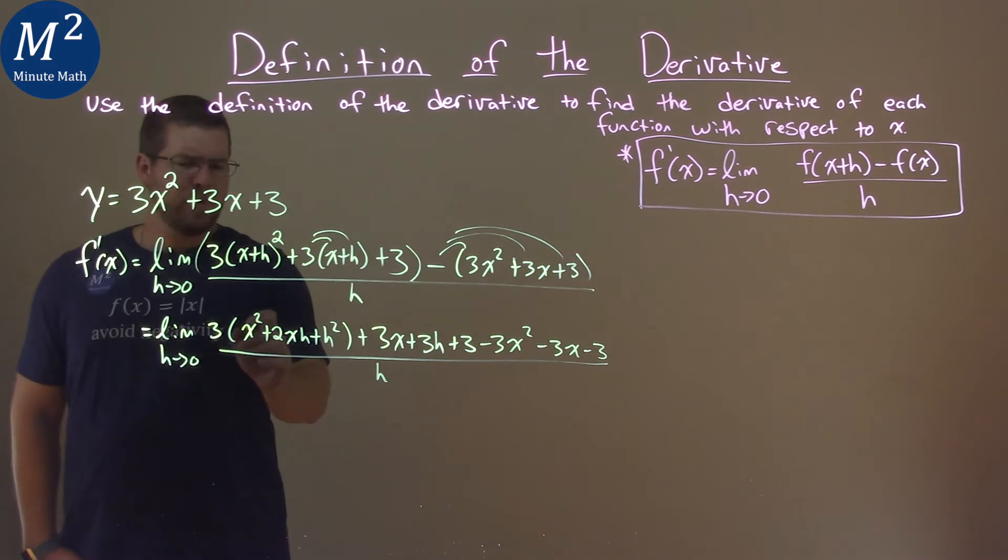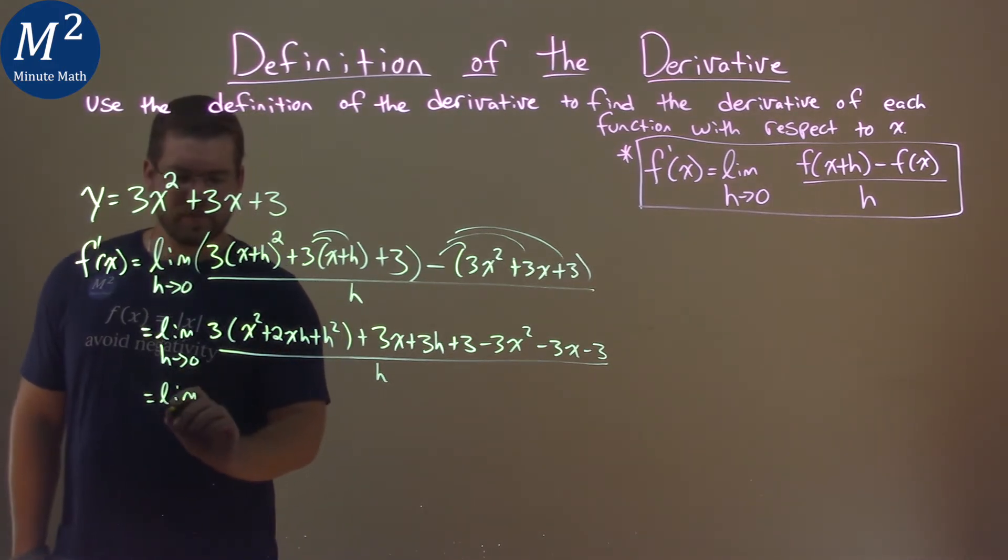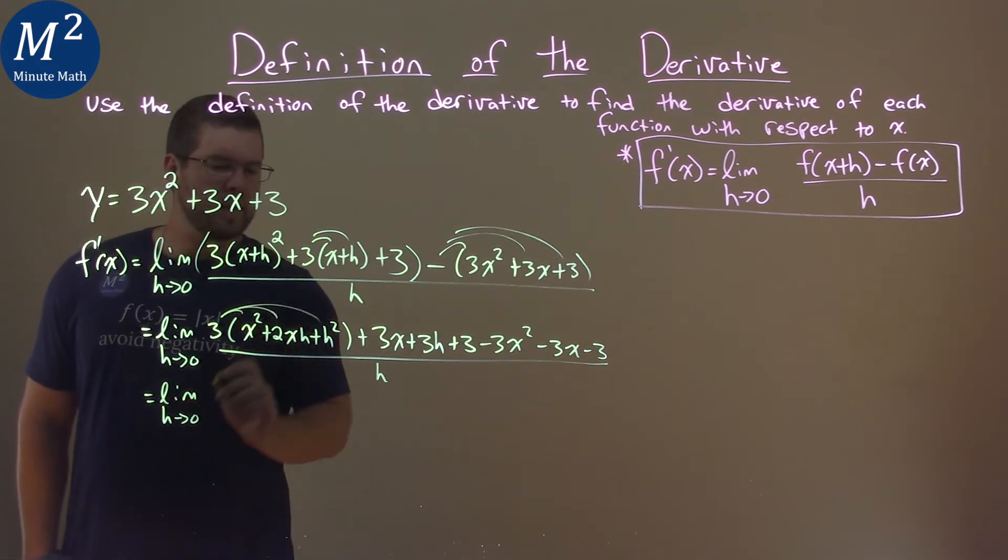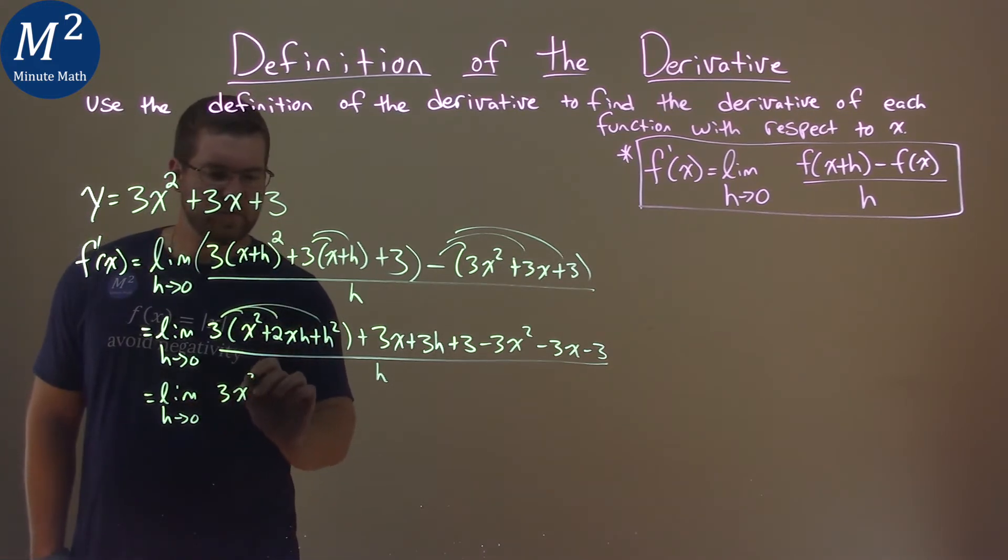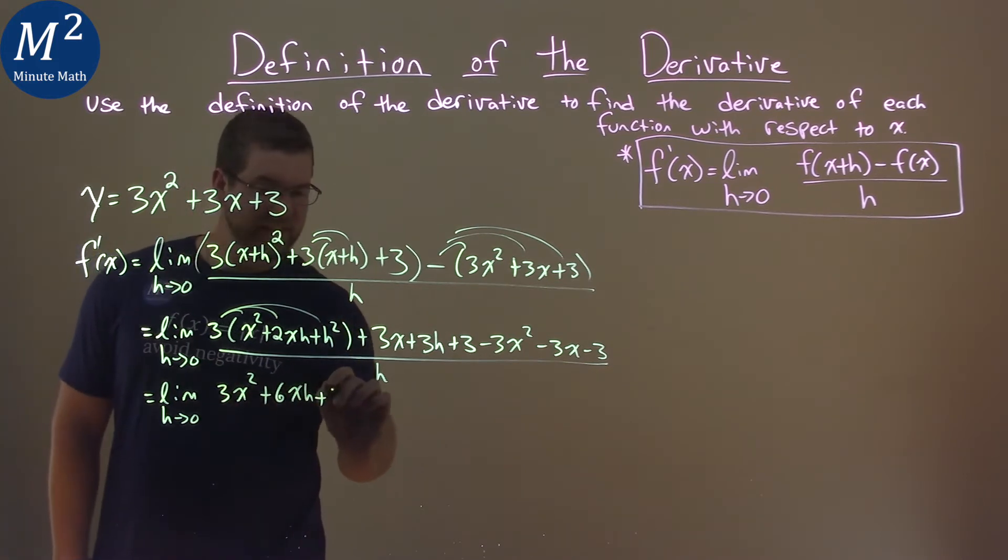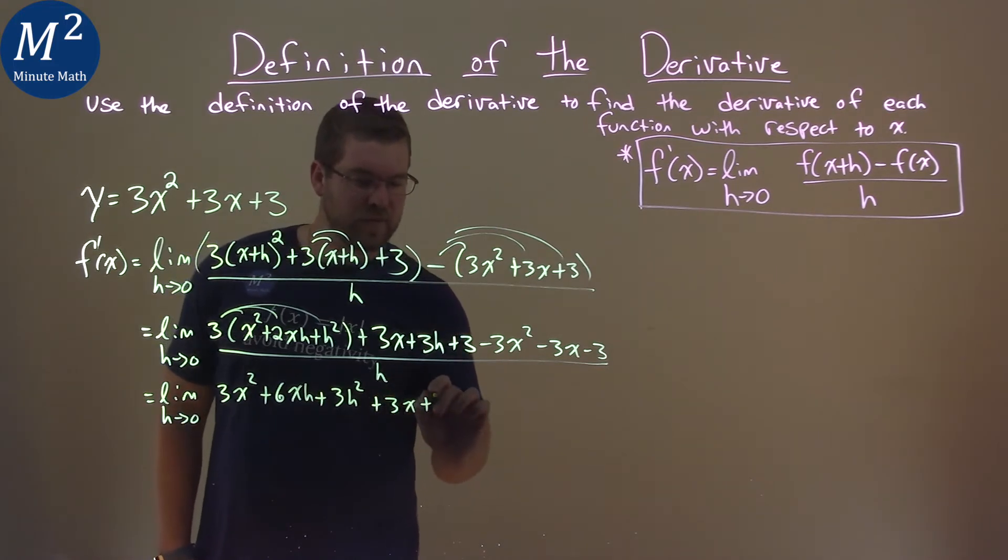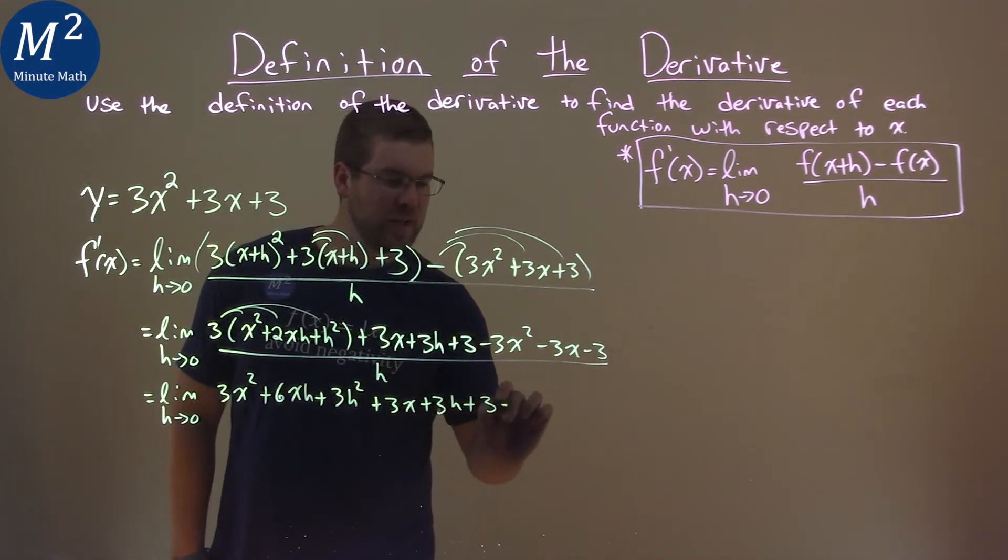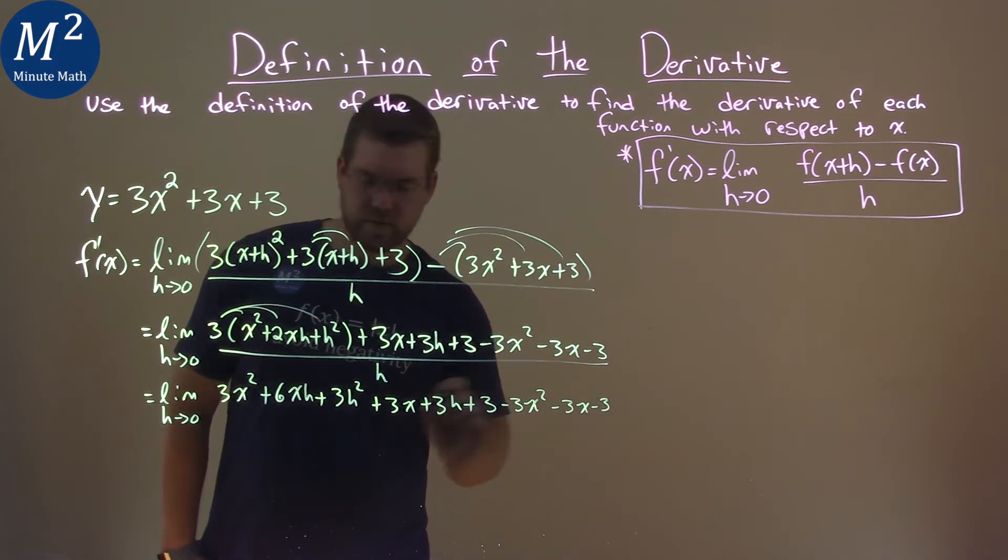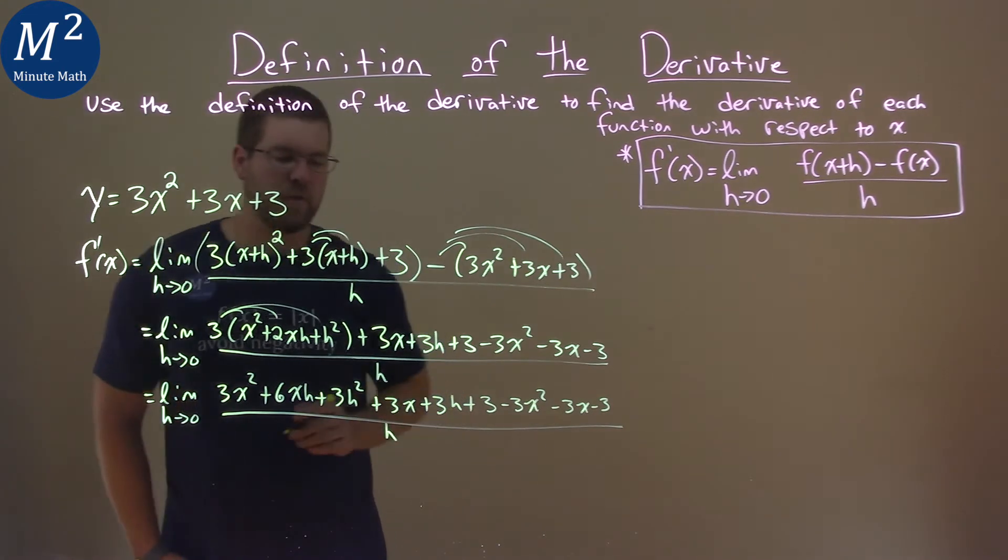Almost there. We still have to distribute this 3 across right here. This is the last big step and everything kind of cancels out. Now, again, 3 gets distributed: 3x squared plus 6xh plus 3h squared plus 3x plus 3 minus 3x squared minus 3x minus 3. So many 3's here. Luckily there's that 6. All over h.